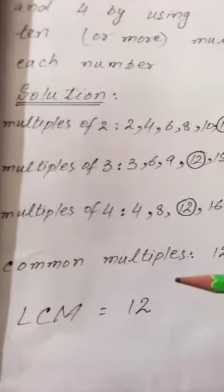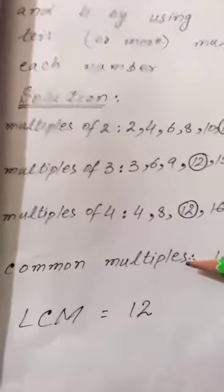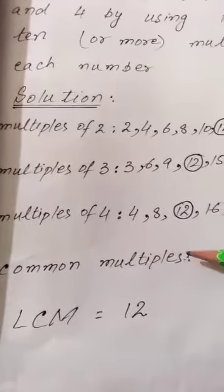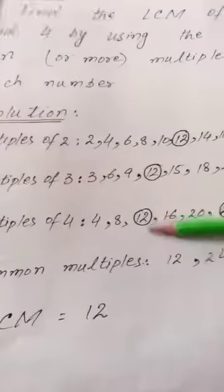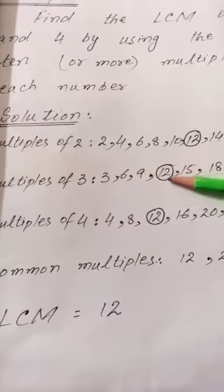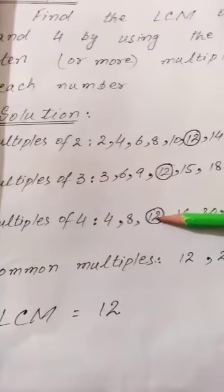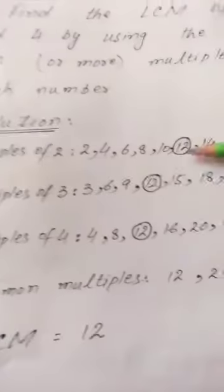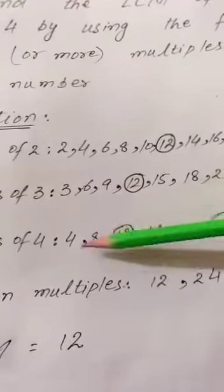Now we have to find out the common multiples among the multiples of 2, multiples of 3, and multiples of 4.